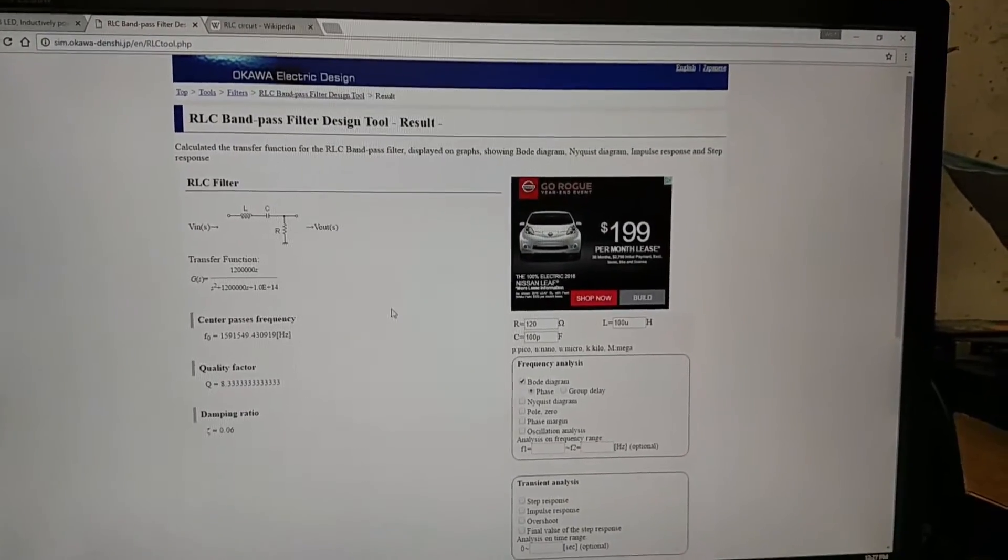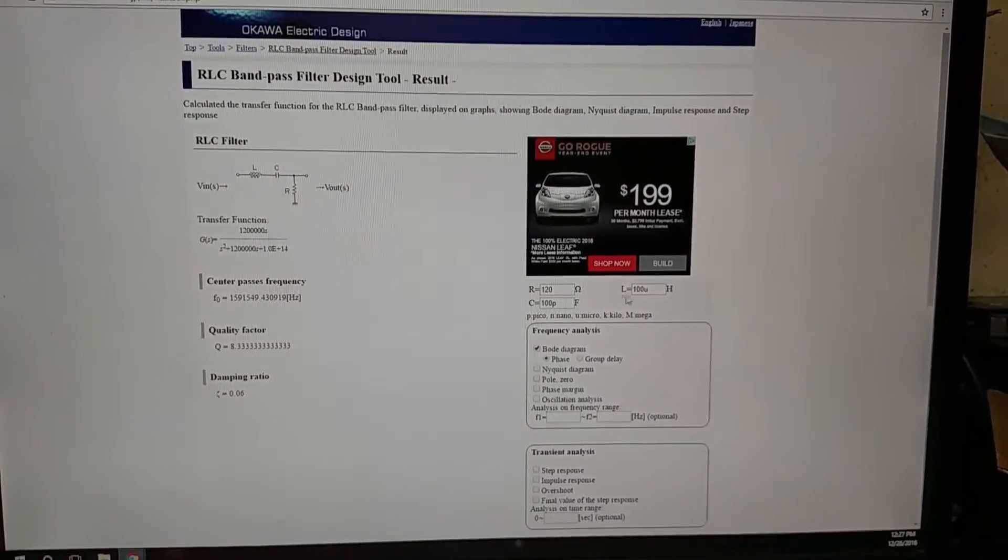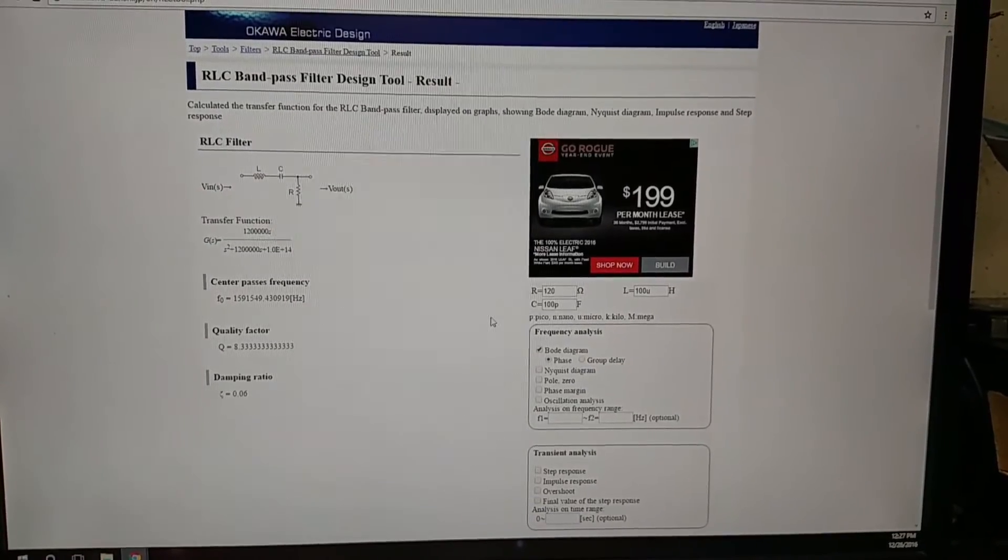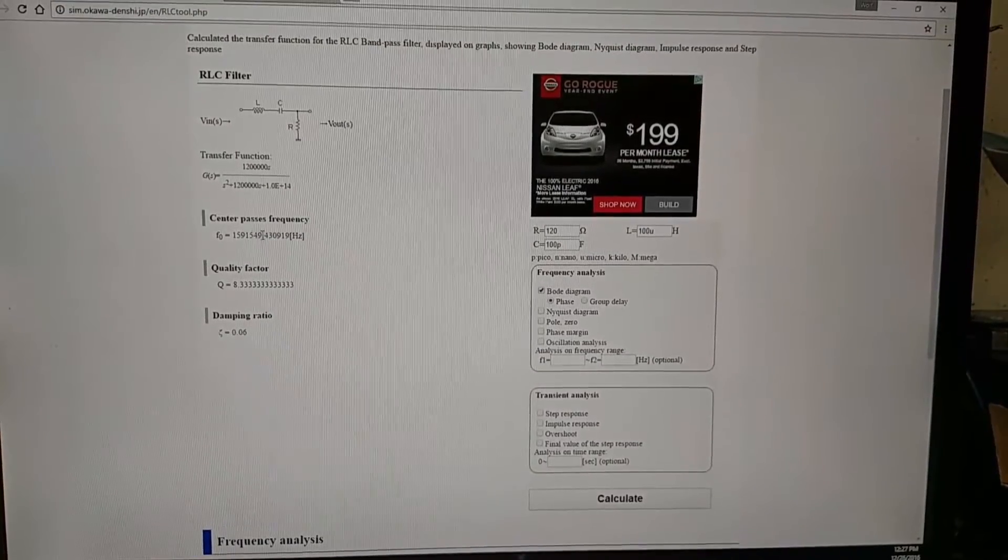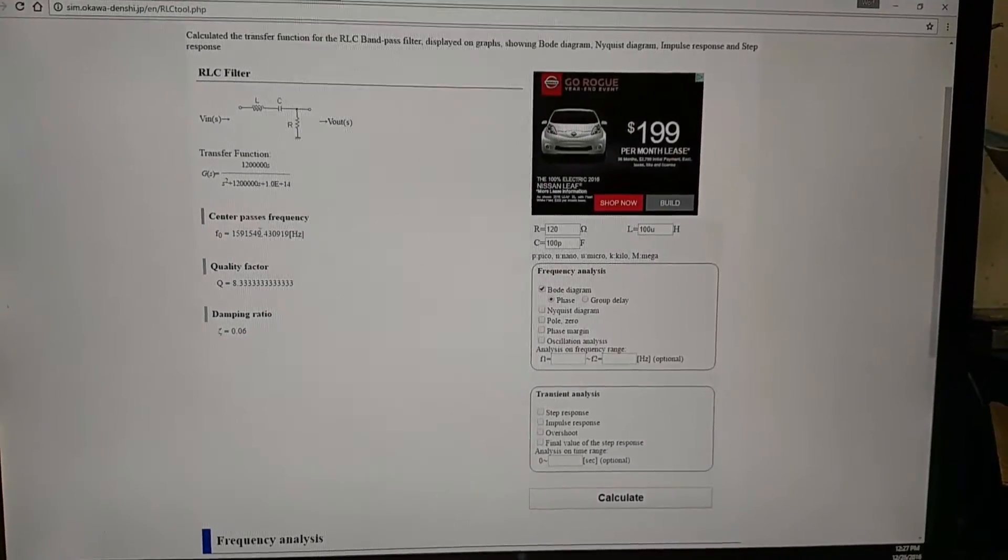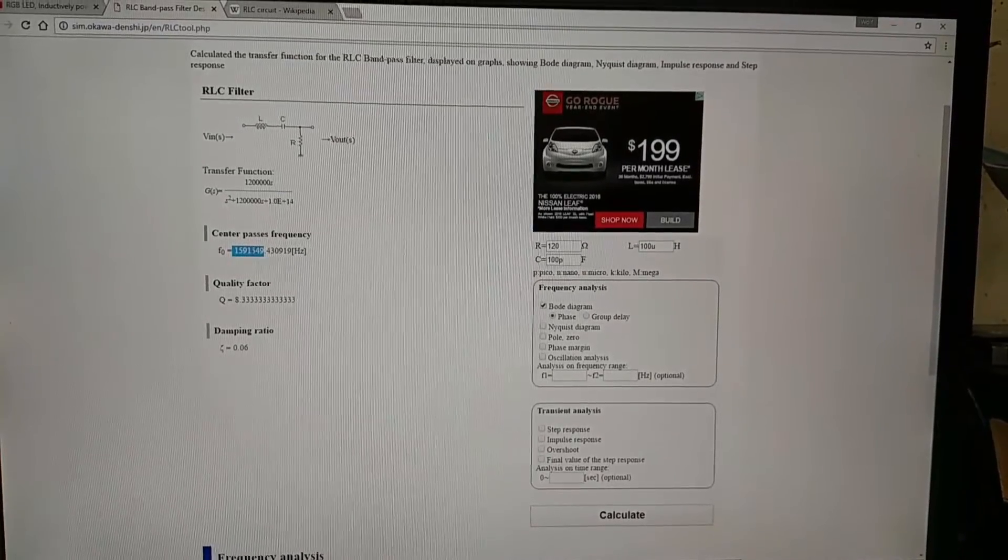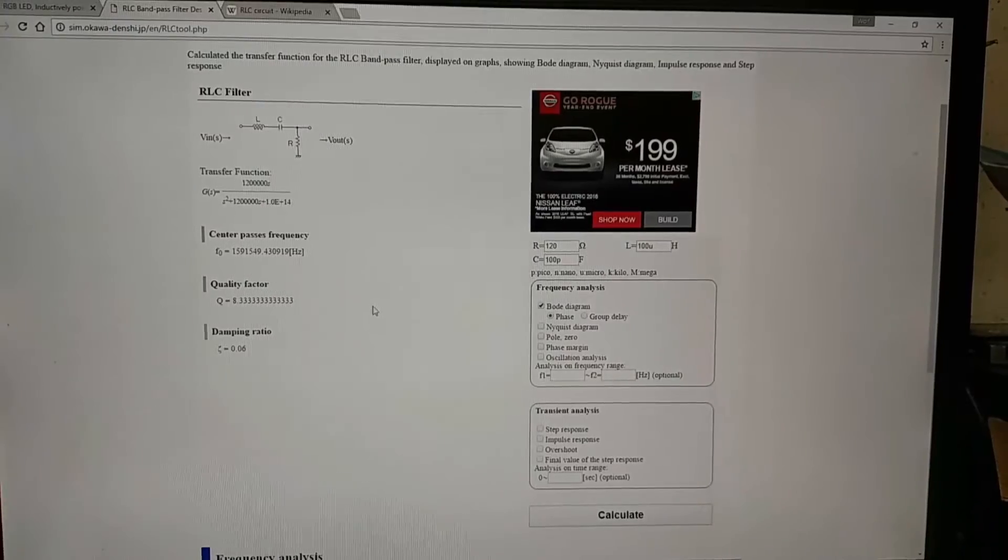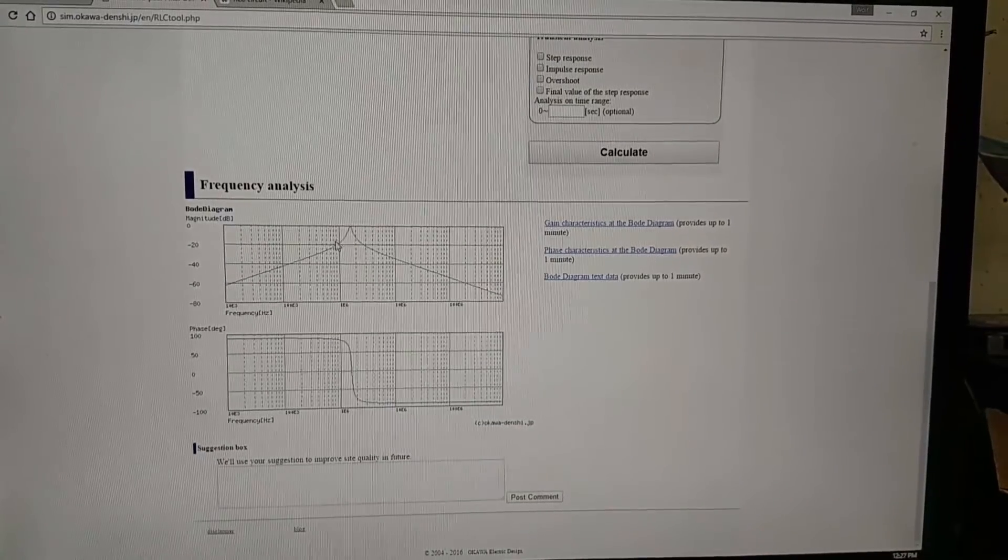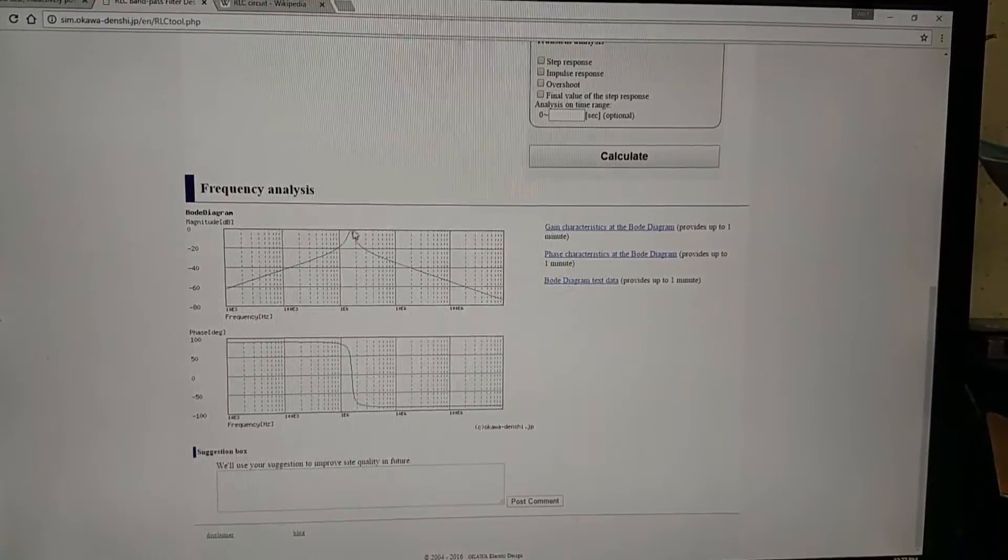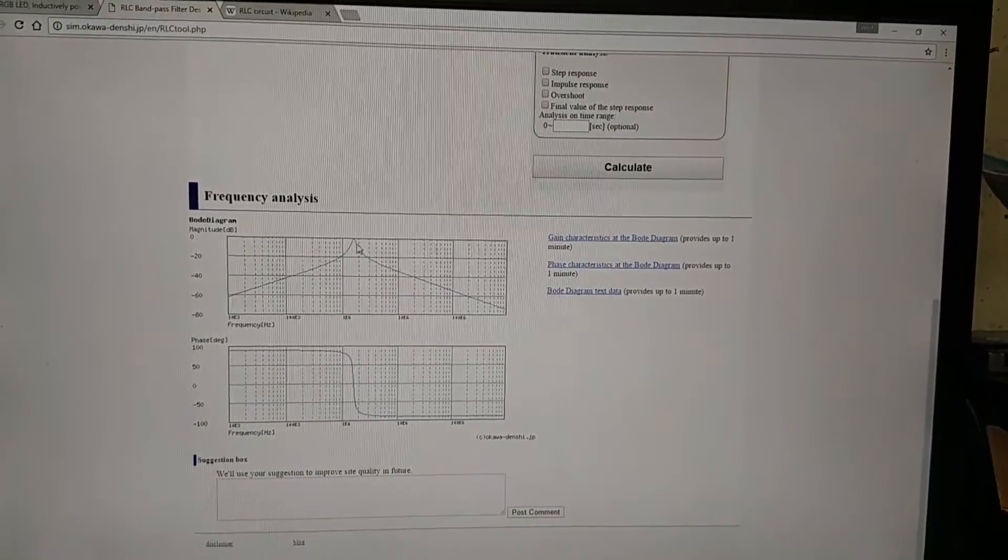I've put in my parameters here: 120 ohms, 100 microhenry inductor, and 100 picofarad capacitor. That gives me a center frequency of 1.59 megahertz. You can see the curve here. We're trying to block everything on either side and just let the energy through to power the LED right at that frequency, 1.6 megahertz.